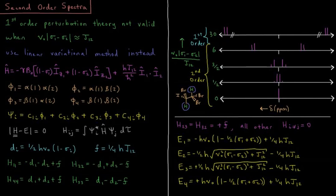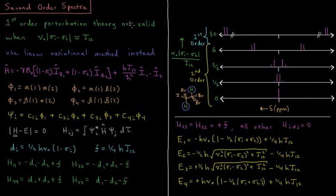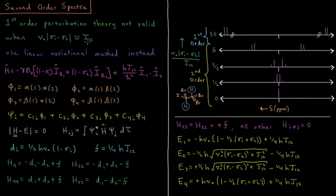This video will discuss second-order spectra in NMR and what happens when our coupling constants aren't much greater than the separation between two coupled peaks. First-order perturbation theory is not valid when the difference in frequency between two peaks on an NMR spectrum — which is the spectrometer frequency times the difference in their magnetic shielding constant — is approximately equal to the coupling constant, or not greater than a factor of 10.